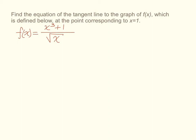Find the equation of the tangent line to the graph of f of x at the point corresponding to x equals 1. The function here is f of x equals x cubed plus 1 over the square root of x. We need to find the derivative of this so that we are able to find the slope of the tangent line when x equals 1.